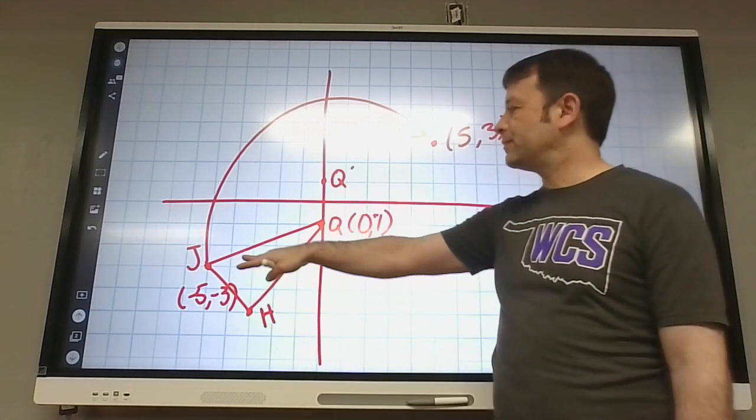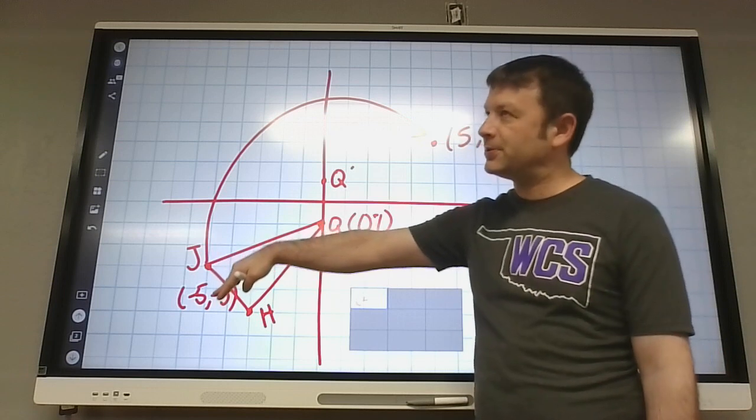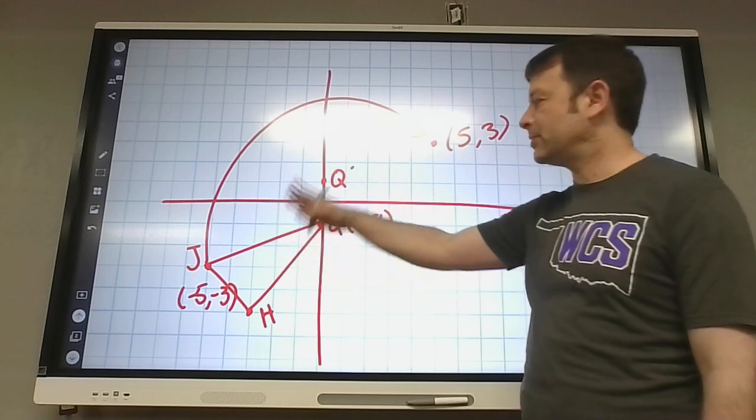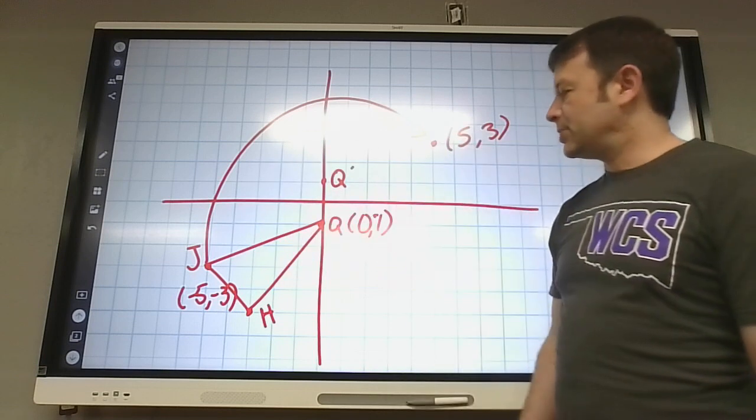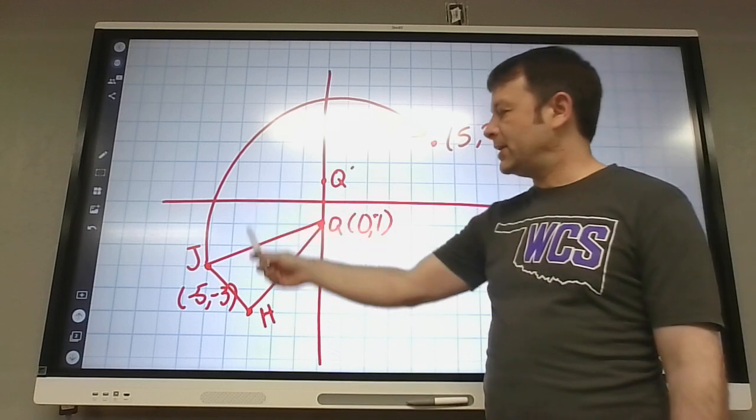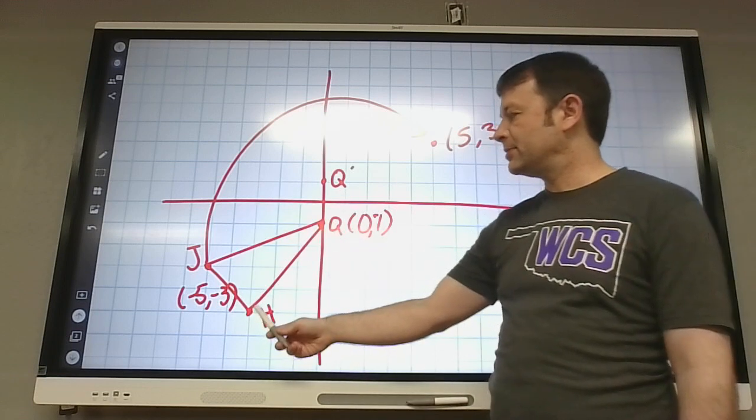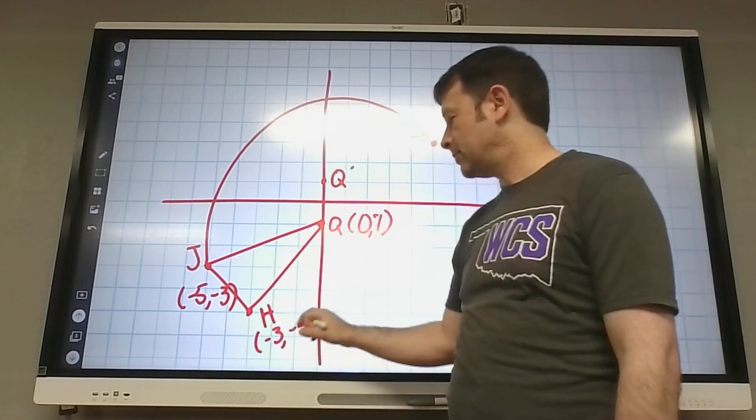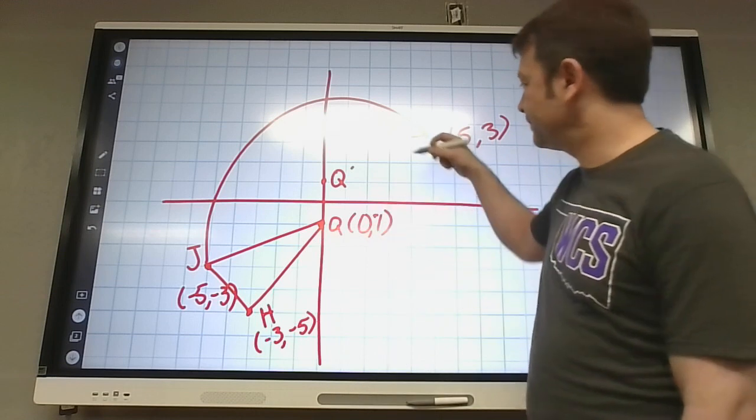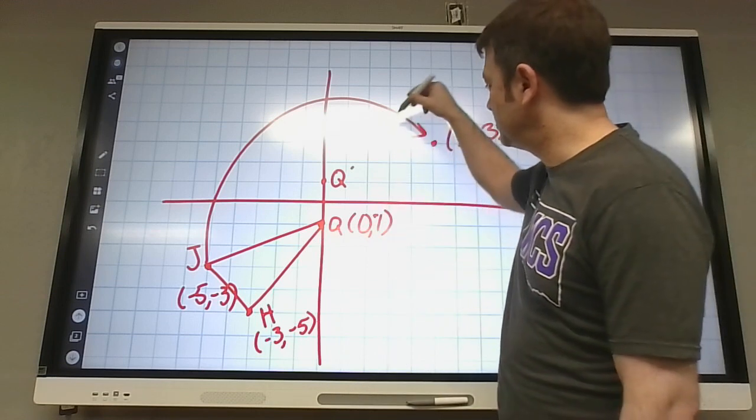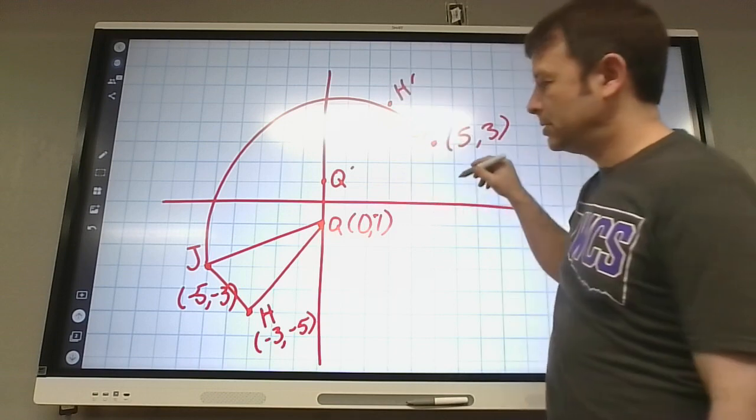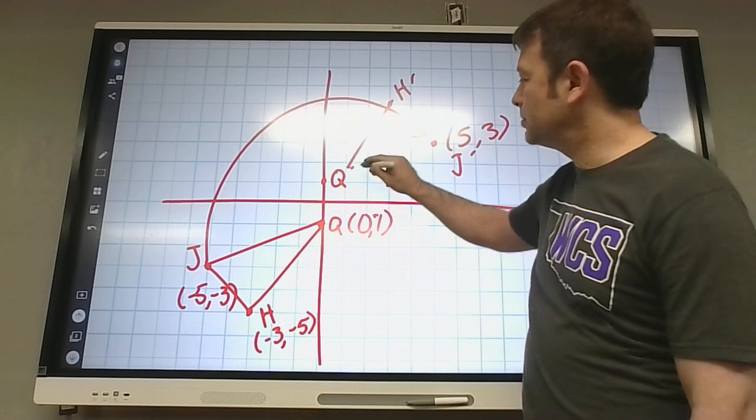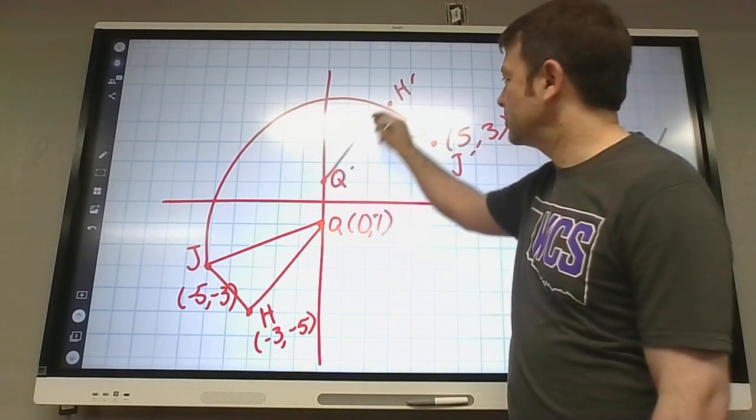By the way, if you're going 180 degrees and you're in the third quadrant, you should always end up in the second quadrant, right? Because it's like on the outside of the origin. So H is at negative 3, negative 5. So where is it going to end up at? 3, 5. So yeah. H prime, J prime. Connect. Connect the dots.